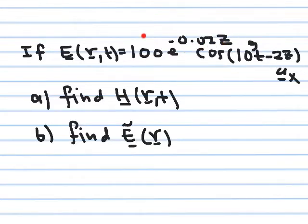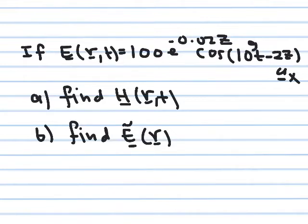This factor makes the wave weaker and weaker as it travels in the z-direction. As z increases, this negative exponent causes the amplitude to decrease. This is called a decaying traveling wave — it does travel from one point to another in space, but as it travels it decays. The problem asks us to find the corresponding magnetic field and the phasor of the electric field.